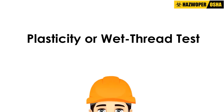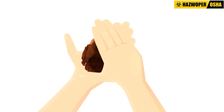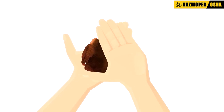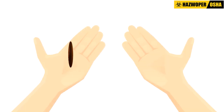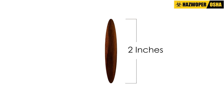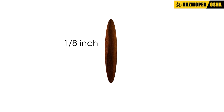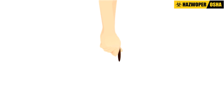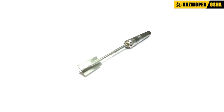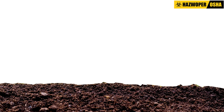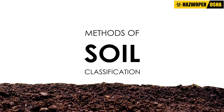For the plasticity or wet thread test, the competent person takes a small wet soil sample, molds it into a small ball, then attempts to roll it into a thin thread approximately two inches in length by one-eighth inch in diameter. If the soil thread doesn't break when held at one end, the soil can be considered Type B. If the thread breaks, it is Type C soil. Devices like a pocket penetrometer, shear vane, or torvane may also be used to determine the unconfined compressive strength of soil.